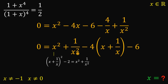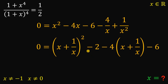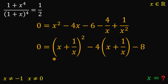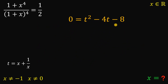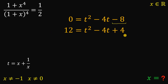Now we replace x squared plus 1 over x squared with its equivalent. Combining the constant terms negative 2 and negative 6 gives negative 8. Since we have a common term of x plus 1 over x, we introduce a substitution: let t equal x plus 1 over x. Our equation now becomes t squared minus 4t minus 8. If this constant were positive 4, the right-hand side would be a perfect square trinomial. So we add 12 to both sides: negative 8 plus 12 is positive 4. Now t squared minus 4t plus 4 is a perfect square trinomial, which factors as t minus 2, all raised to the power of 2.